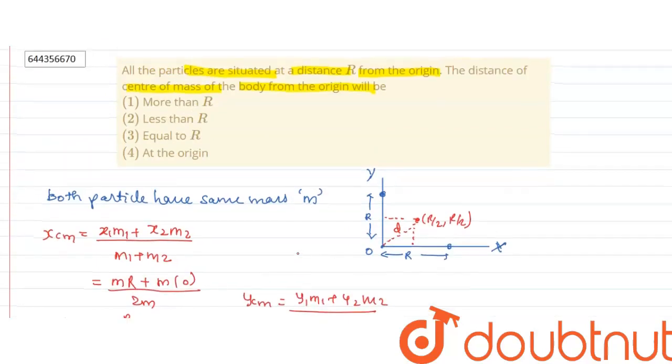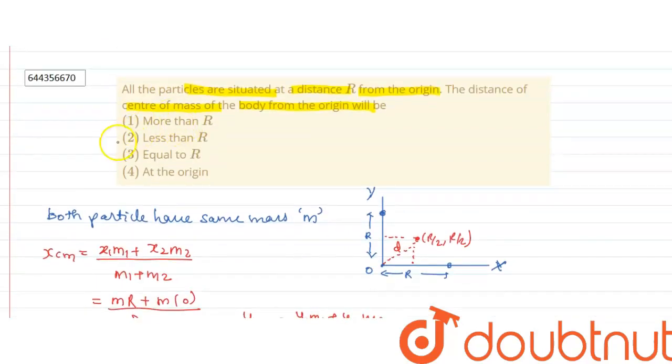So, we have to check which option is correct. So, option 2 is correct, because the distance of center of mass of the body from the origin is R by root 2, which will be less than R. Thank you.